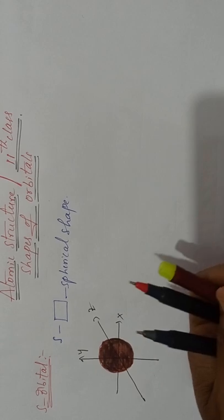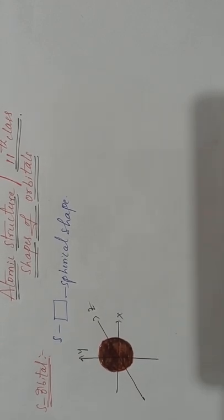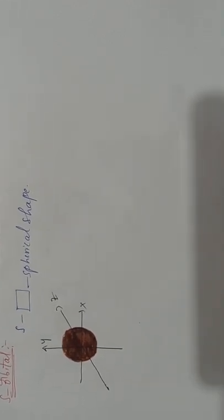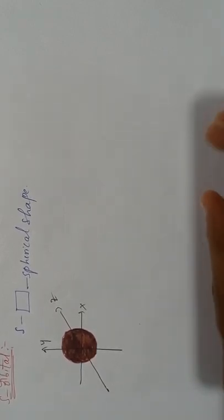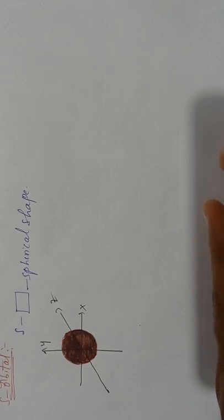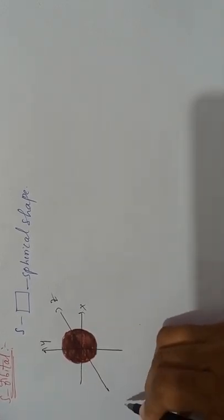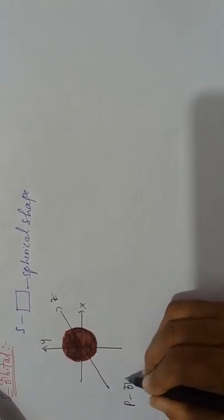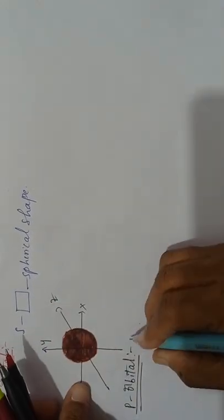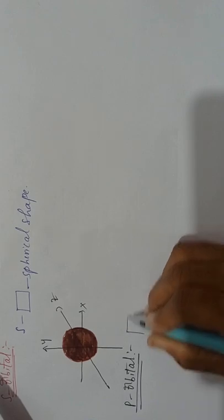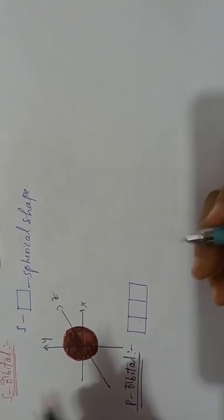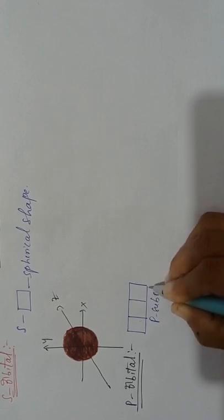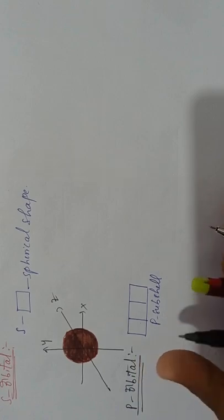Now coming to the P orbital shapes. In the P sub shell, how many orbitals will be there? Three orbitals will be there. These are named as PX, PY, and PZ. The shape of the P orbital is dumbbell shape.